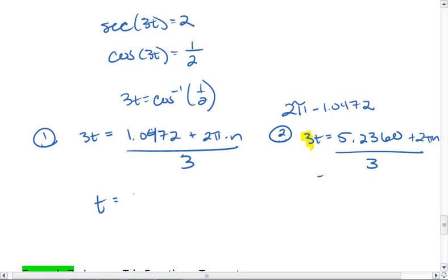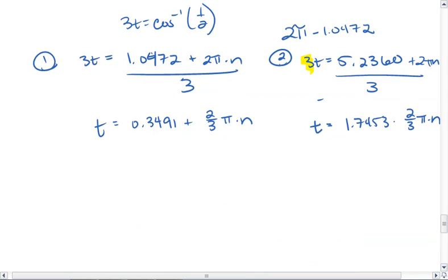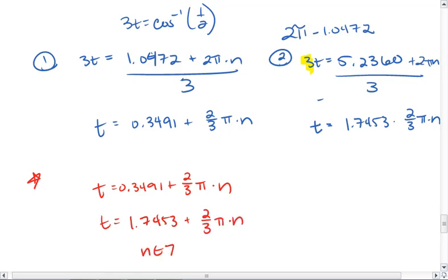So our solutions are 0.3491 plus 2/3π times n, and 1.7453 plus 2/3π times n. Thus, we have t equals 0.3491 plus 2/3π times n, and t equals 1.7453 plus 2/3π times n, where n is an integer and all of these are in radians. That is your final answer.